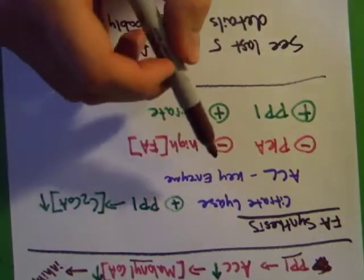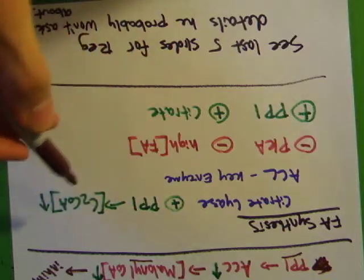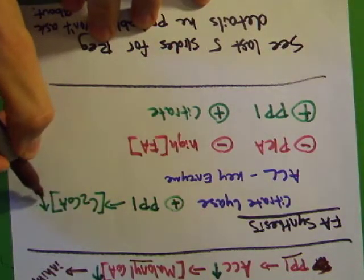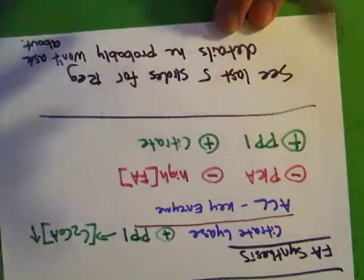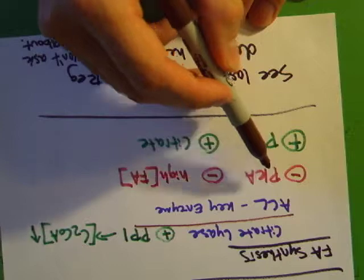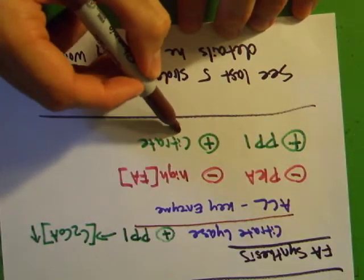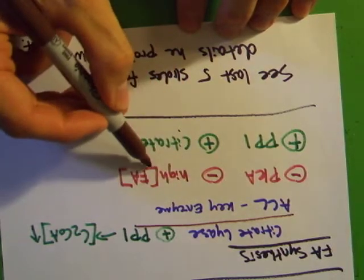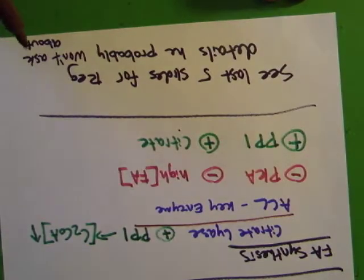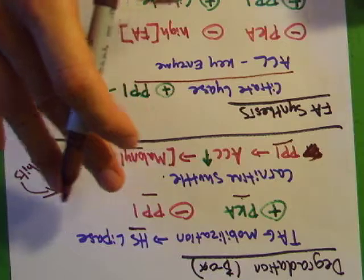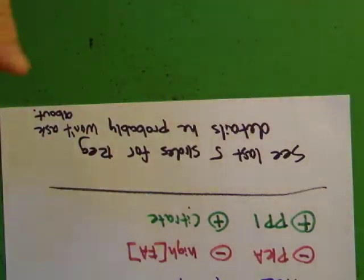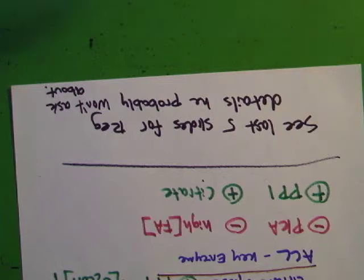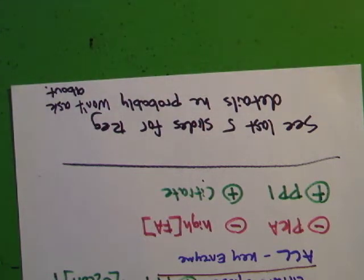For fatty acid synthesis regulation: citrate lyase is activated by PP1 and more specifically by high concentrations of acetyl-CoA. The key enzyme is ACC — you won't make fat if you're exercising or fasting. You will make it if you're eating. ACC is also partially activated by citrate and inhibited by high amounts of fatty acids. That's the summary of what he most commonly asks about in regulation. The last several slides go deeper into regulation — worth a look if you want the full picture.